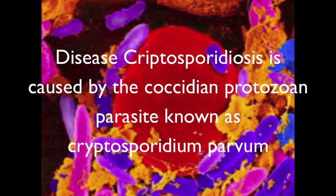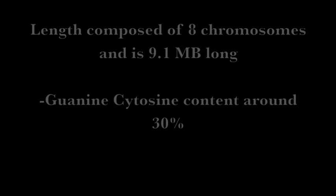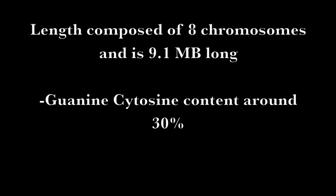Cryptosporidiosis, also known as crypto, is the disease caused by the coccidian parasite Cryptosporidium parvum. The genome sequencing of Cryptosporidium parvum has not yet been completed, but the part of the genome that has been sequenced is made up of DNA. Its length is 9.1 megabases and it is composed of 8 chromosomes ranging from 1.04 to 1.5 megabases.